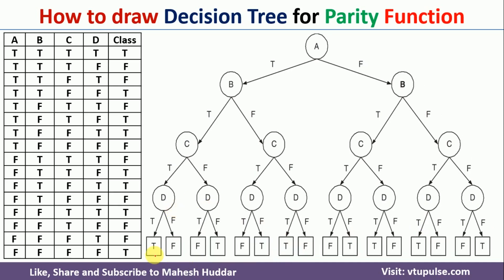Once you assign this particular labels to each and every path here, the final decision tree looks something like this. So in this video, I have discussed how we can draw a decision tree for the given parity function. This is a very simple procedure you can follow to draw decision trees for any parity function or boolean functions also.